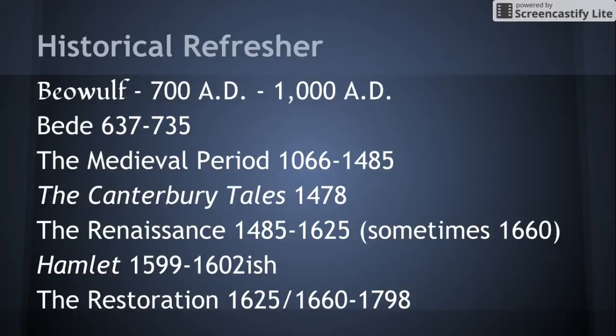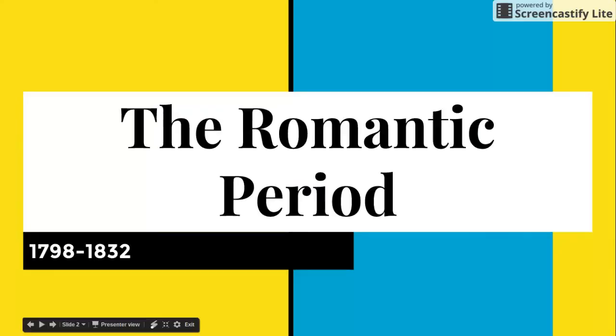We started with Beowulf, worked our way into Bede with the history of the English church and people. Then we entered into the medieval period, where we read the Canterbury Tales. Then we got into the Renaissance, where you've got Shakespeare and Hamlet. We moved into the Restoration with some of John Donne's poetry. And now we are going into the Romantic period. We just read The Rime of the Ancient Mariner. So let's put some of this stuff into the historical literary context.